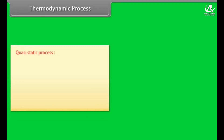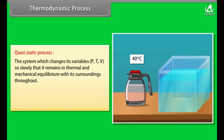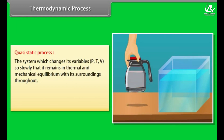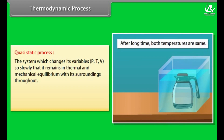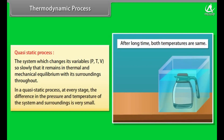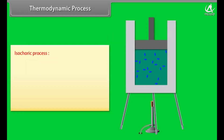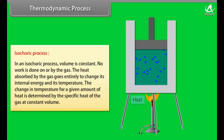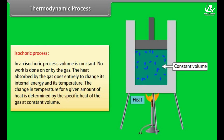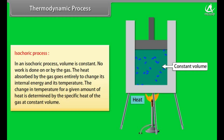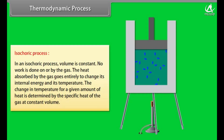Thermodynamic processes: In a quasi-static process, the system changes its variables so slowly that it remains in thermal and mechanical equilibrium with its surroundings throughout; at every stage the difference in pressure and temperature between system and surroundings is very small. In an isochoric process, volume is constant, no work is done on or by the gas, and the heat absorbed goes entirely to change internal energy and temperature, determined by specific heat at constant volume.